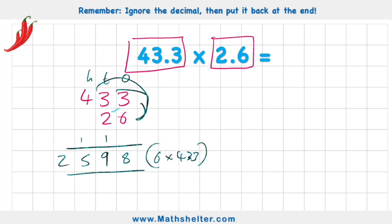Now let's do the next number. 2 times 3 — remember it's not a 2, it's a 20. So I'm going to show that by putting my placeholder. 2 times 3 is 6. 2 times 3 is 6. 2 times 4 is 8. So the answer to 20 times 433 is 8,660. Add them both together.